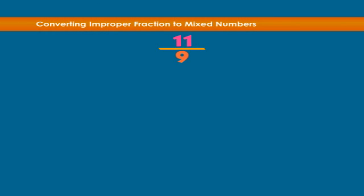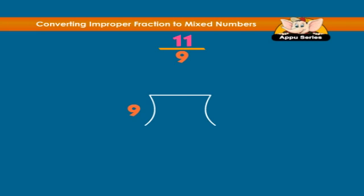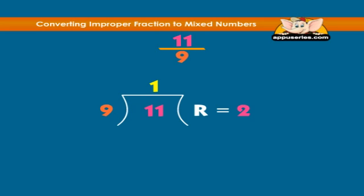11 over 9: 9 goes into 11 once with 2 left over. Hence, 11 over 9 equals 1 and 2 ninths.